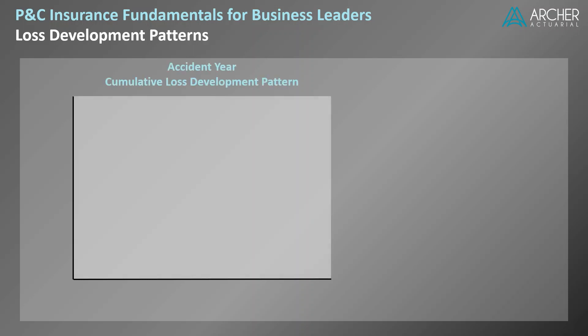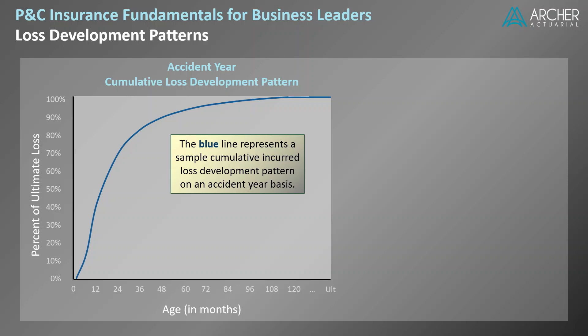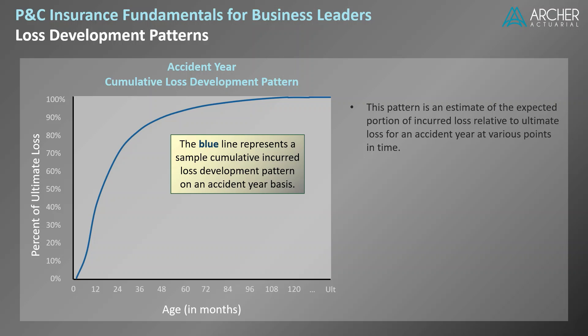We're going to start with a visual of a specific type of pattern: a cumulative incurred loss development pattern on an accident year basis. Consider a chart with the x-axis representing the age of an accident year. By convention, the age is presented in months, where each month represents the time elapsed from the beginning of the accident year. The y-axis represents the expected percent of ultimate loss, ranging from zero to one hundred percent. The blue line in this graph represents a sample cumulative incurred loss development pattern on an accident year basis — an estimate of the expected portion of incurred loss relative to ultimate loss for an accident year at various points in time.